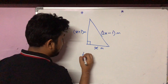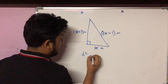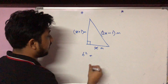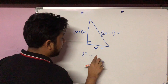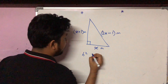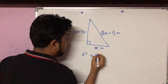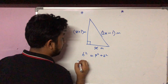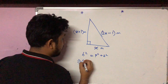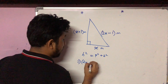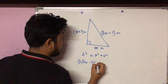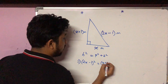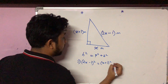By Pythagoras theorem, hypotenuse squared equals perpendicular squared plus base squared. So (2x minus 1) squared equals (x plus 1) squared plus x squared.